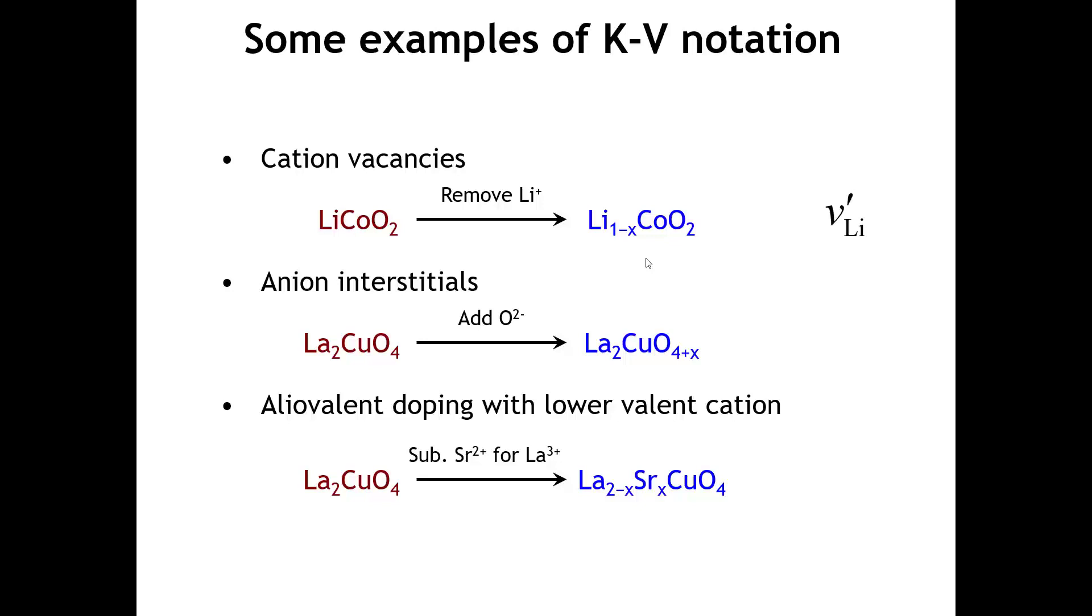If we have anion interstitials, like in lanthanum copper oxide, the Kroger-Vink notation is as follows. The foreign thing in the lattice is an oxygen ion. It's sitting at the interstitial site, so the subscript is this lowercase i. Because an oxide ion has a negative 2 charge, and it's sitting on a site that would normally be uncharged, the vacancy has a negative 2 charge.